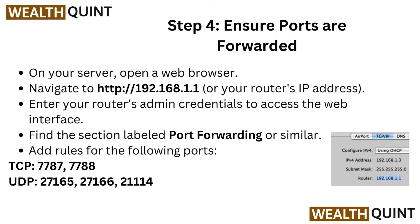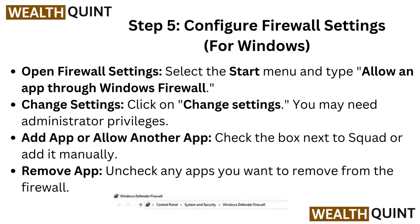Step 5: Configure firewall settings. For Windows, open firewall settings by selecting the start menu and typing 'Allow an app through Windows Firewall.' Click on change settings — you may need administrator privileges. Then click 'Add app' or 'Allow another app' and check the box next to Squad or add it manually. To remove an app, uncheck any app you want to remove from the firewall.